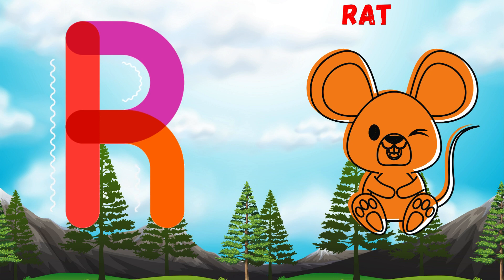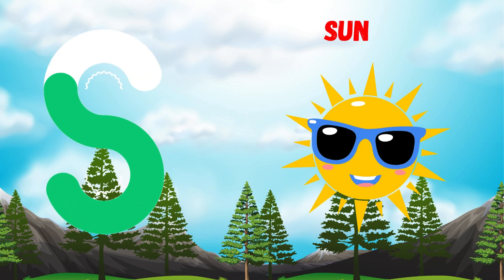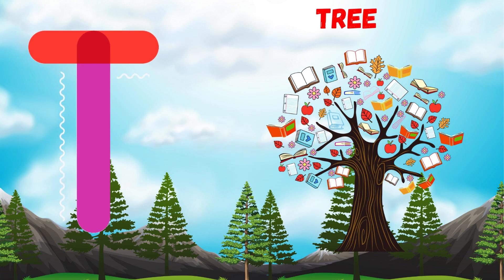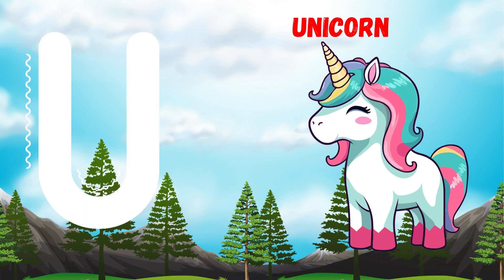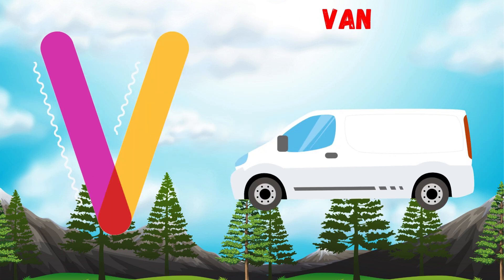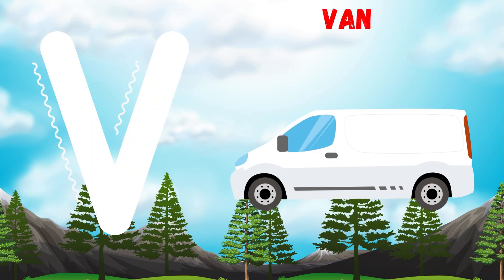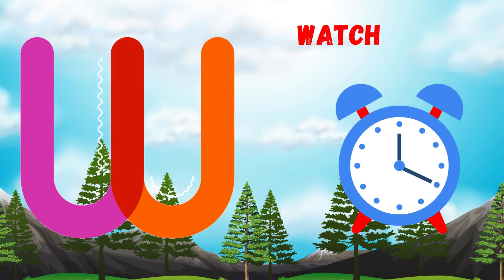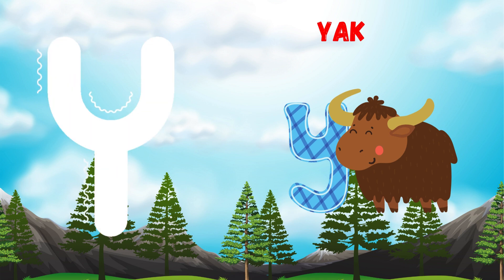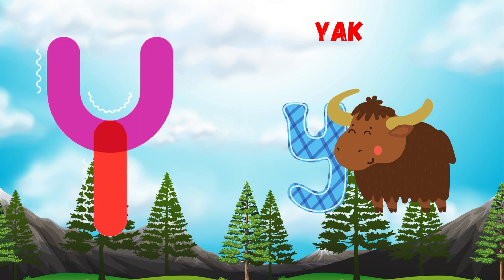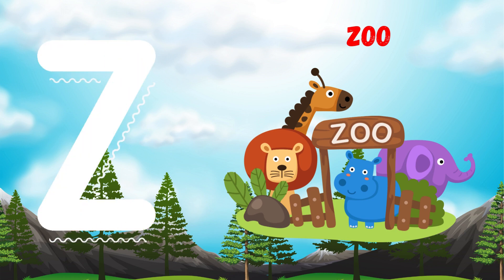S for sun. U for unicorn. V for one. W for watch. X for x-ray. Y for yak. Z for zoo. Thank you.